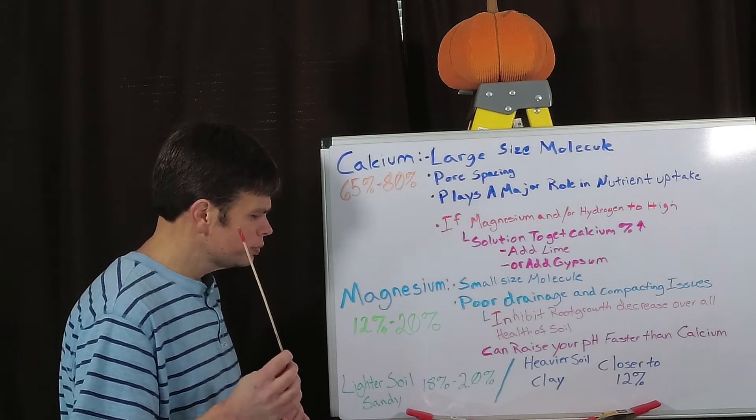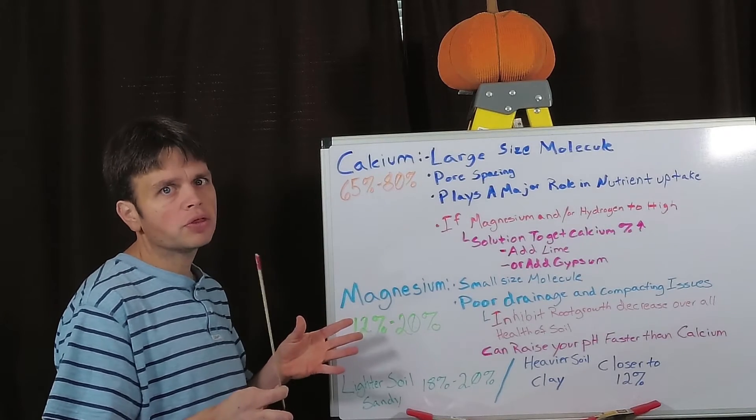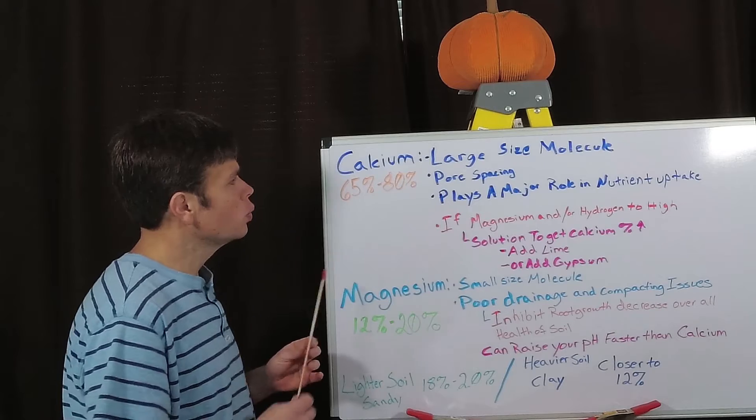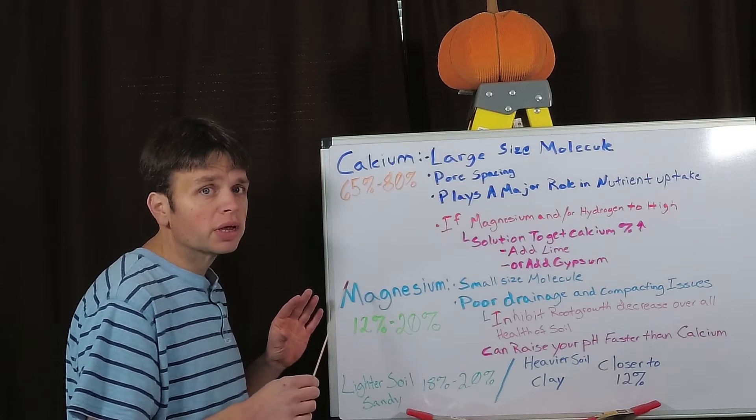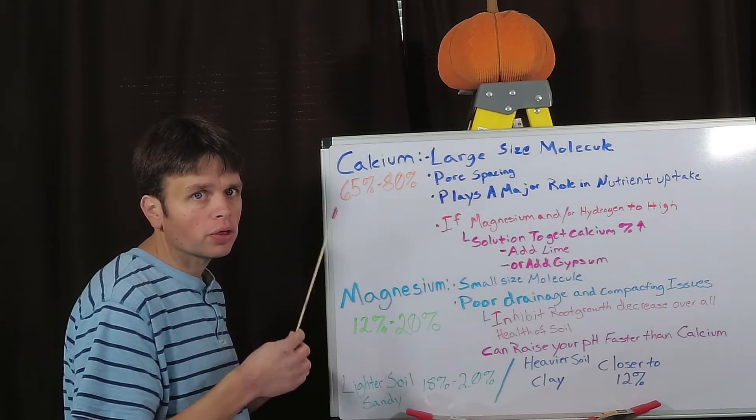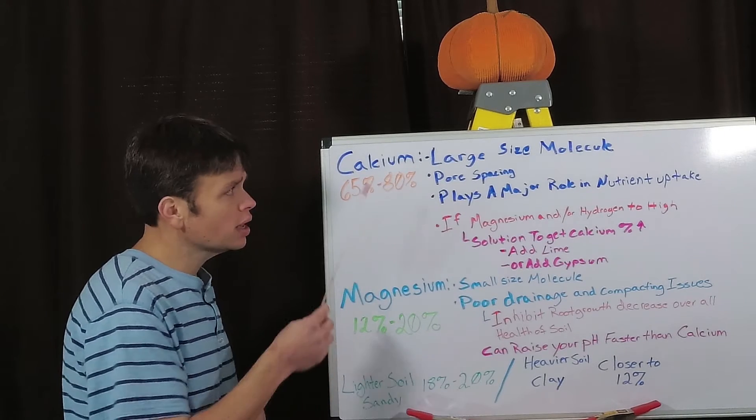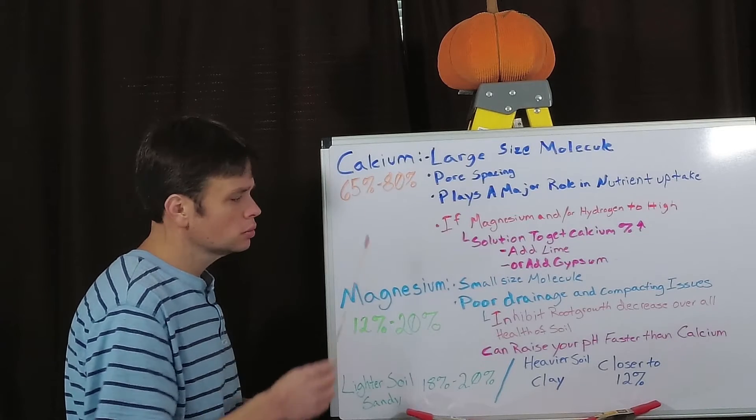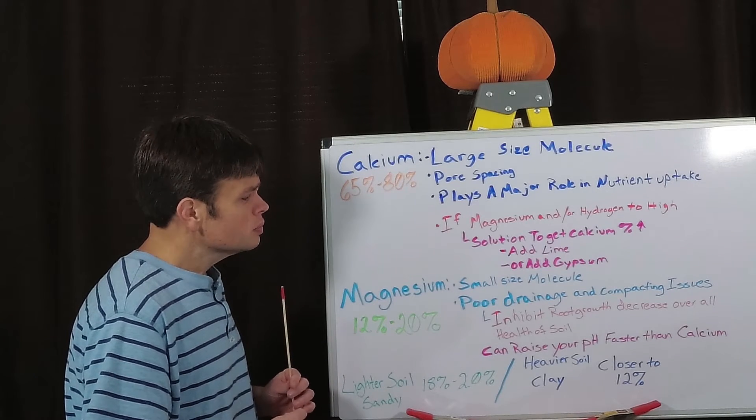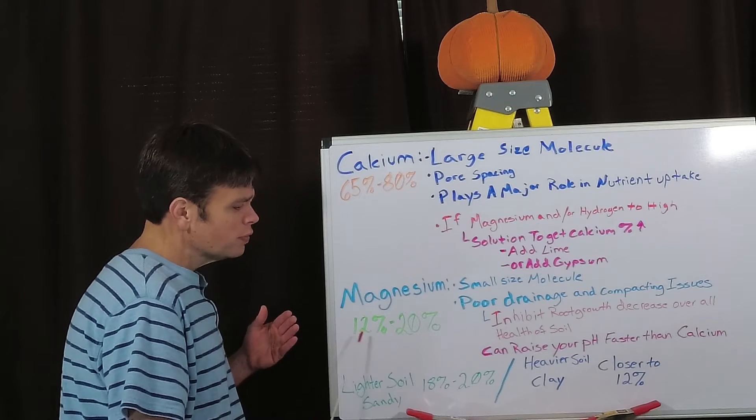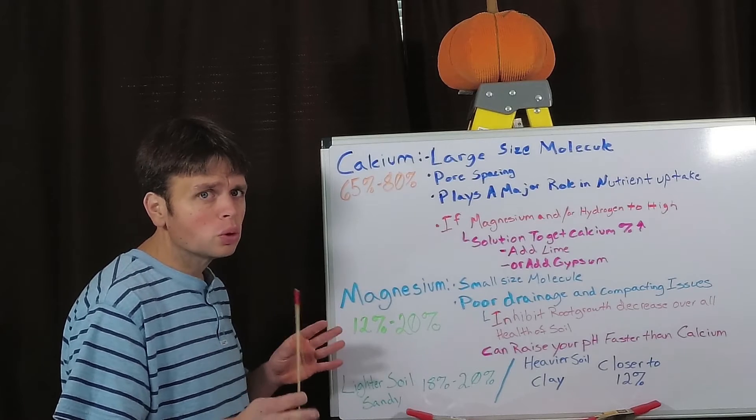And there was one thing with my research that I came across that I found pretty interesting, because we always think of calcium being the pH raiser, which in fact magnesium can actually raise your pH faster than what calcium does. So if your pH is high, it may not just because you have high calcium, maybe it's from your magnesium. So 12 to 20 percent, and I just got telling you that you don't want that number too high.